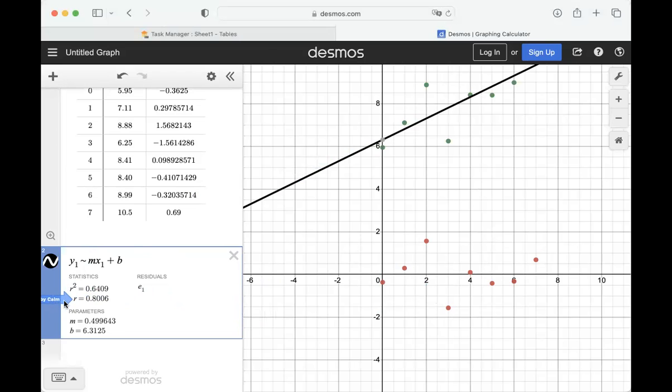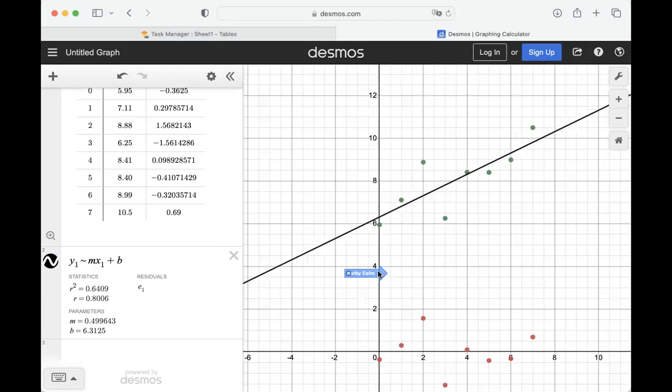And if we look at the residuals here, except for maybe two of them, most of them are very close to the x-axis. So that means they are close to the line. And even if we were to look at the line of best fit, Y equals 0.5x plus 6.31, most of the data points are very close to the line. So it is a fairly good fit.